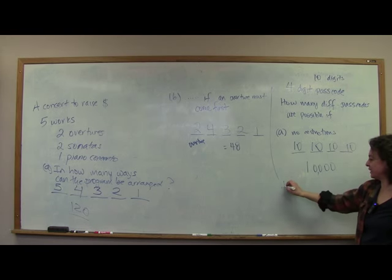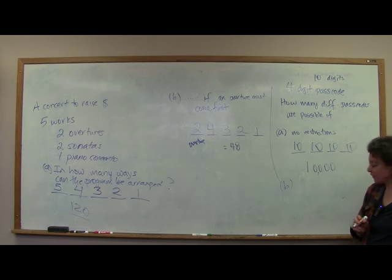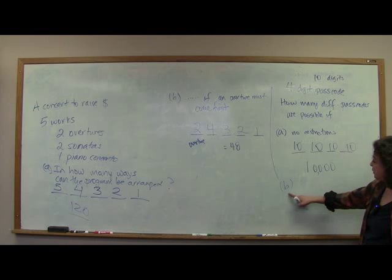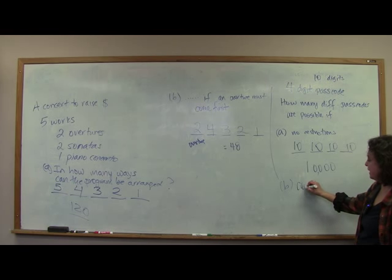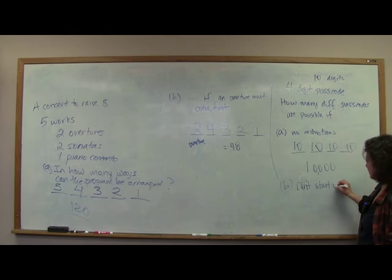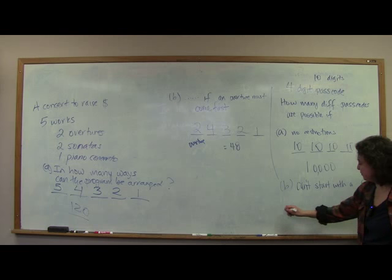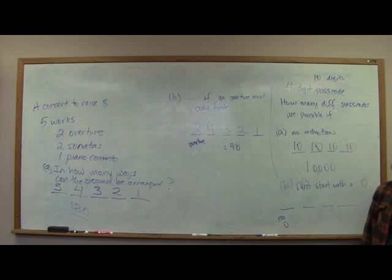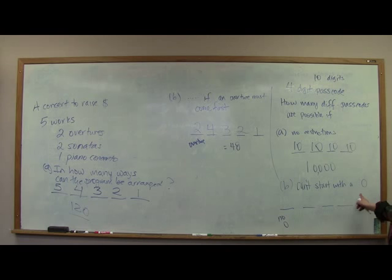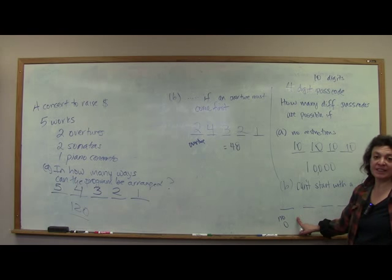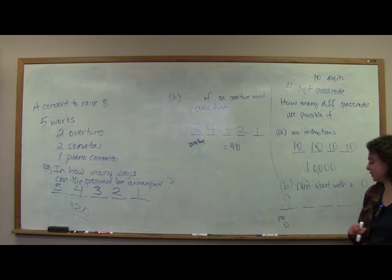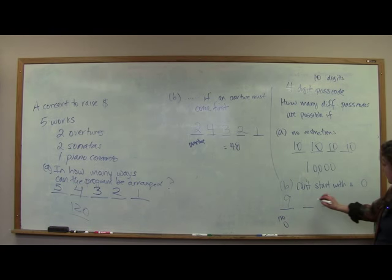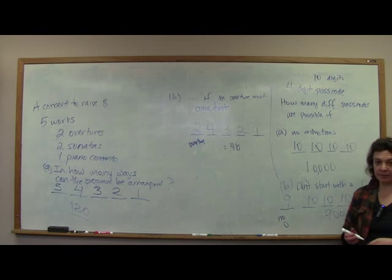We have 10 digits here, here, and here — so there are 10,000 different passcodes. Now let's add the stipulation that it can't start with a zero. If we can't start with zero, there are 10 digits and we can't use one of them, so we have 9 choices for the first digit. The rest have no limitations, so we get 9,000 possibilities.